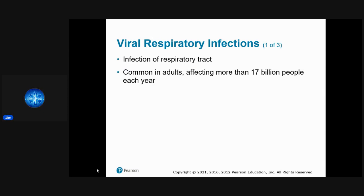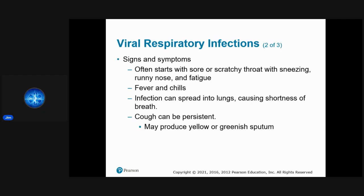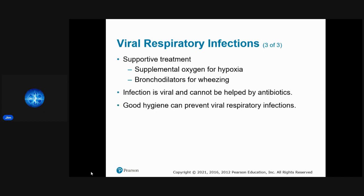Viral respiratory infections affect more than 1.7 billion people each year — like the flu. They often start with a sore or scratchy throat, sneezing, runny nose, fatigue, fever, and chills, then spread to the lungs causing shortness of breath and sometimes pneumonia. A cough may produce yellow or green sputum. Treatment is supportive: supplemental oxygen and bronchodilators for wheezing. Since it's viral, antibiotics won't help. Good hand hygiene is key to prevention.